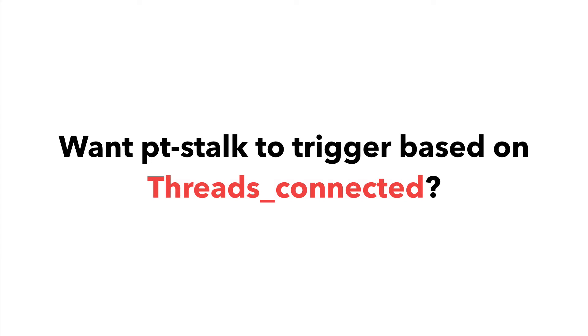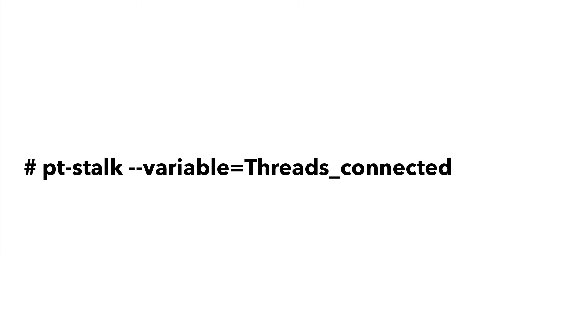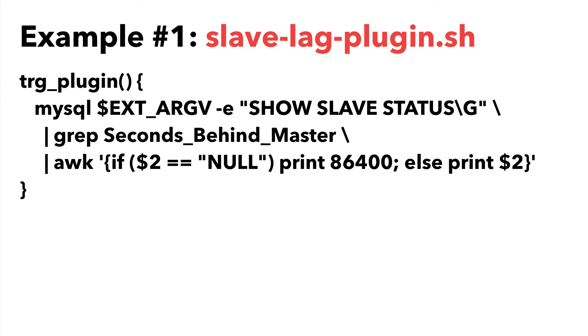Let's now talk a little bit about the trigger. Even though the trigger is preset to threads running, you can actually change it. For example, maybe instead of threads running you want to monitor threads connected — then it's as simple as changing the variable. But you can actually write your own trigger function. The SlaveLag plugin allows you to fire a trigger based on the number of seconds that the replication slave is behind. To monitor for a 300-second delay, save the script to a file, say slaveLag-plugin.sh, and then use the following arguments to pt-stalk.